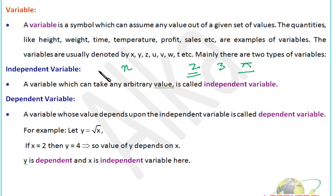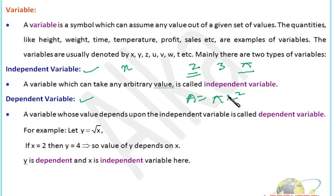There are two types of variables: independent variable and dependent variable. An independent variable can take any arbitrary value. For example, in the circle area formula πr², r is the independent variable — r can take any value: 1, 2, 3, 4, whatever. A dependent variable is one whose value depends upon the independent variable. Here, if r increases, area A increases; if r decreases, A decreases. So A changes according to changes in r, making A the dependent variable and r the independent variable.